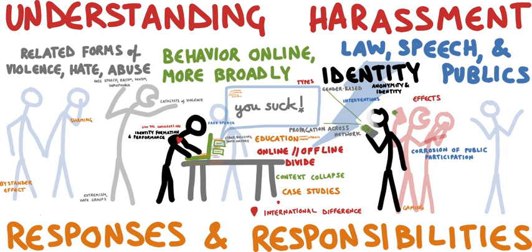There are also problems of privacy when confidential information is intercepted or disclosed, lawfully or otherwise. Debarati Halder and K.J. Shankar further define cybercrime from the perspective of gender and defined cybercrime against women as crimes targeted against women with a motive to intentionally harm the victim psychologically and physically, using modern telecommunication networks such as Internet and mobile phones.